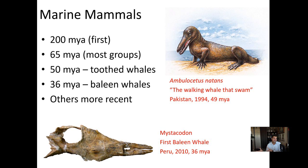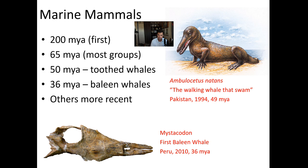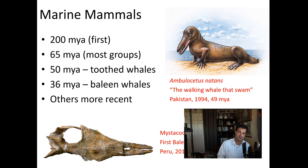Around 36 million years ago we find the first fossil evidence of probably baleen whales — Mysticodus, found in Peru in 2010, dates back 36 million years. Seals and all those other groups appear to come after that, so whales are probably the first marine mammals evolutionarily, with seals and sea lions appearing later.